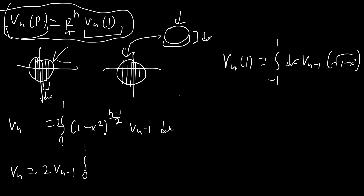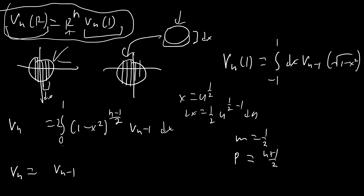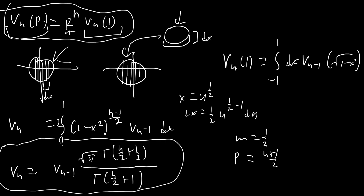To solve the integral, substitute x = u^(1/2), so dx = (1/2)u^(−1/2) du. This transforms the integral into a form matching the beta function B(m, p) with m = 1/2 and p = (n+1)/2. Substituting in, we get: Γ(1/2) · Γ(n/2 + 1/2) / Γ(n/2 + 1), where Γ(1/2) = √π.